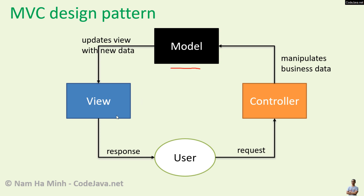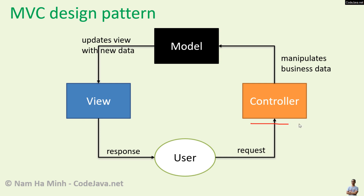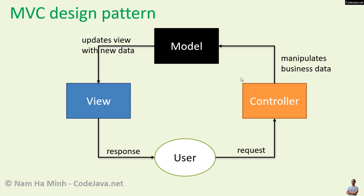The MVC design pattern enforces the application to be divided into different logical layers: model, view, and controller. The model represents the application's data. The view represents the application's user interface — it takes the model as input and renders the UI to the end user. The controller is responsible for handling requests, manipulating business data, generating the model, and selecting an appropriate view. This helps developers build loosely coupled applications by segregating concerns into different layers.